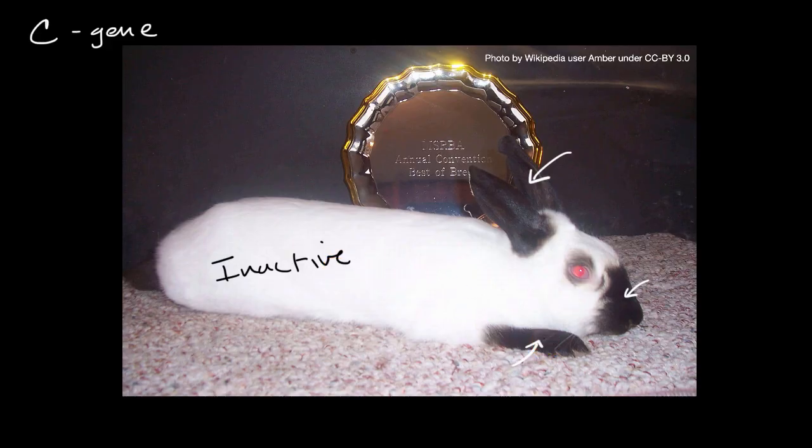Well, it turns out that the enzyme that the C gene codes for is optimally active at 15 degrees Celsius to 25 degrees Celsius. And this alone can actually explain the difference in pigmentation.